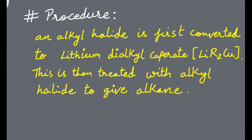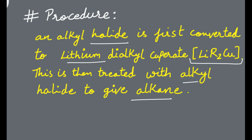Let's start with the statement or the procedure. An alkyl halide is first converted to lithium dialkyl cuprate — this is the general formula. Lithium dialkyl cuprate is then treated with alkyl halide again to give alkane. In summary, an alkyl halide is first converted into a lithium dialkyl cuprate complex, and this complex is then treated with alkyl halide to give alkane.